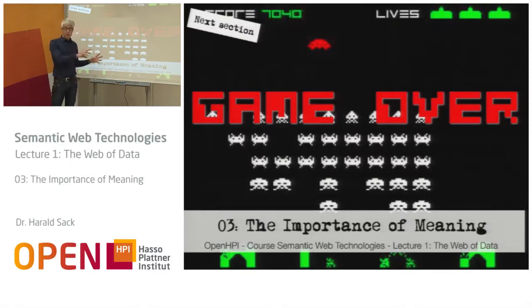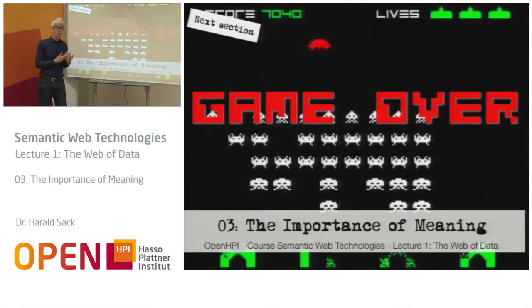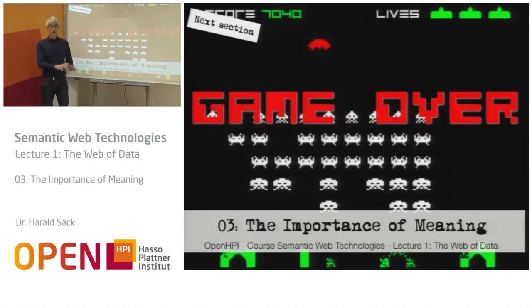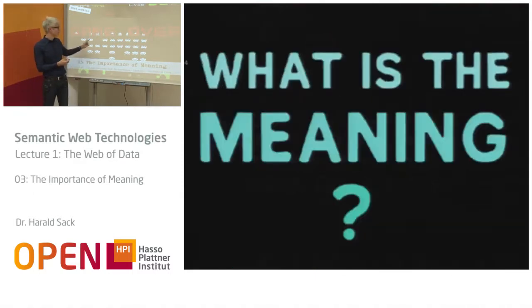We left the last part of the lecture with the question: how big is the web? How much information is in the web? The problem was to cope with this information because we cannot make sense of it. There is no way to express the meaning of information because HTML, as the main language that represents content in the web, is not able to formally express meaning, to formally express semantics.